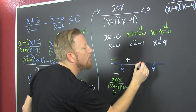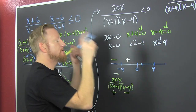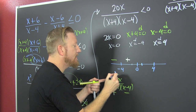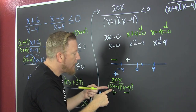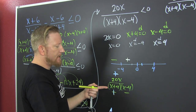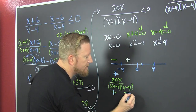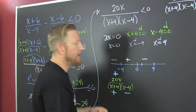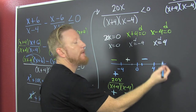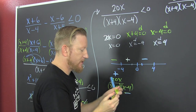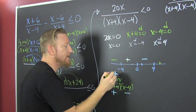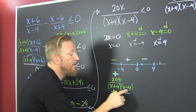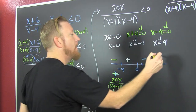Now we're checking something in the interval between 0 and 4 - how about 1. We're not checking the critical values themselves. I put 1 in here: 1 times 20 is positive 20. I put 1 in here: that's a 5. And then I put 1 in here and that's a negative 3. So a positive, a positive, and a negative - that's negative in this interval. Almost done. For bigger than 4, let's check 5. 5 times 20 is positive, 5 plus 4 is positive, and 5 minus 4 is positive. Positive, positive, positive - positive.